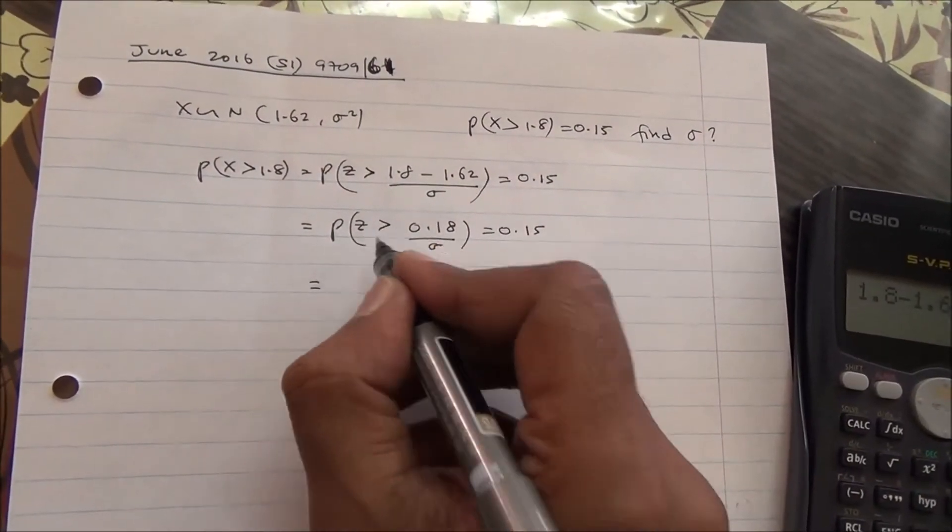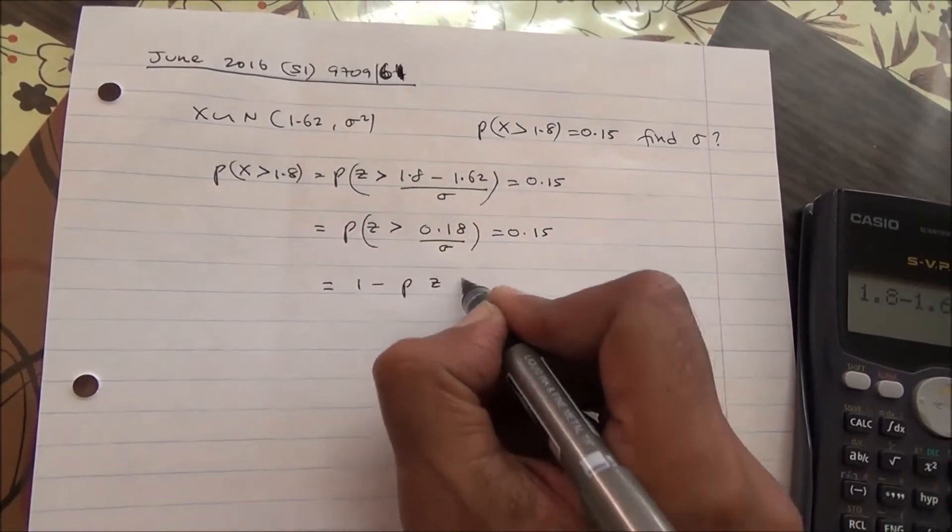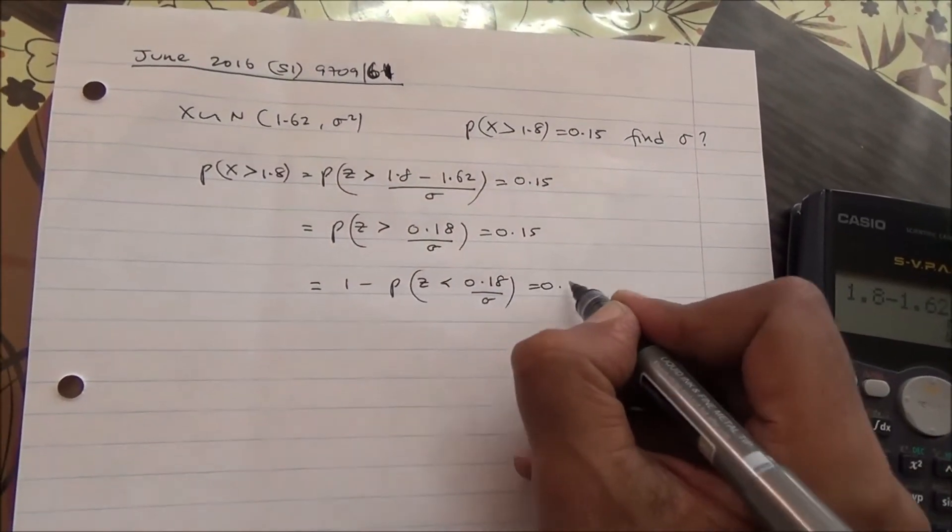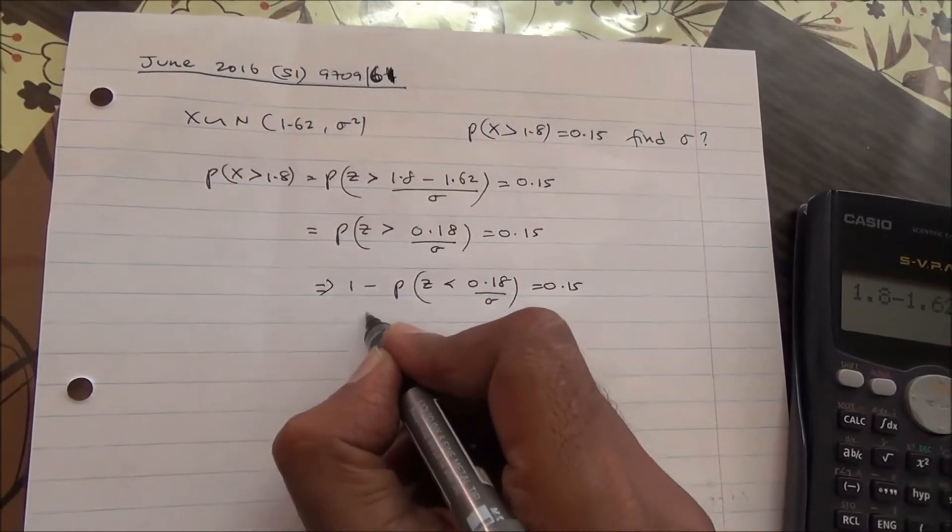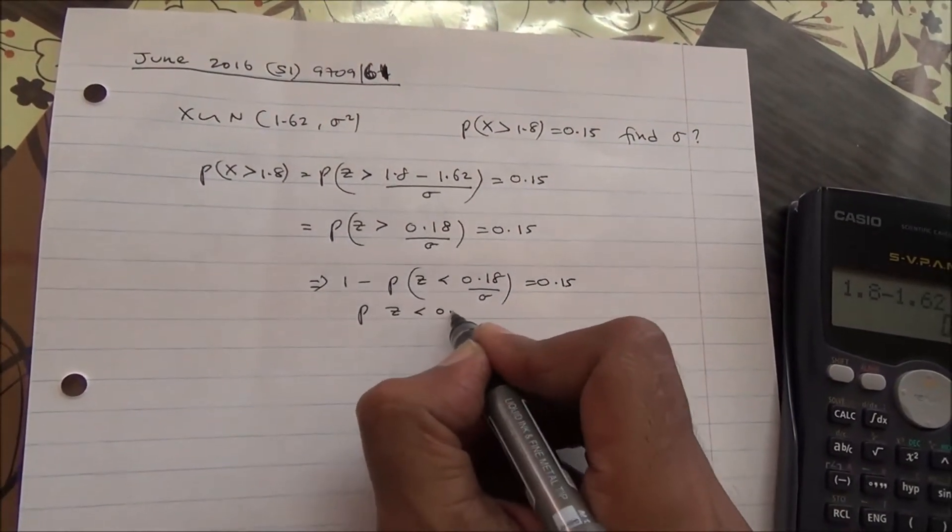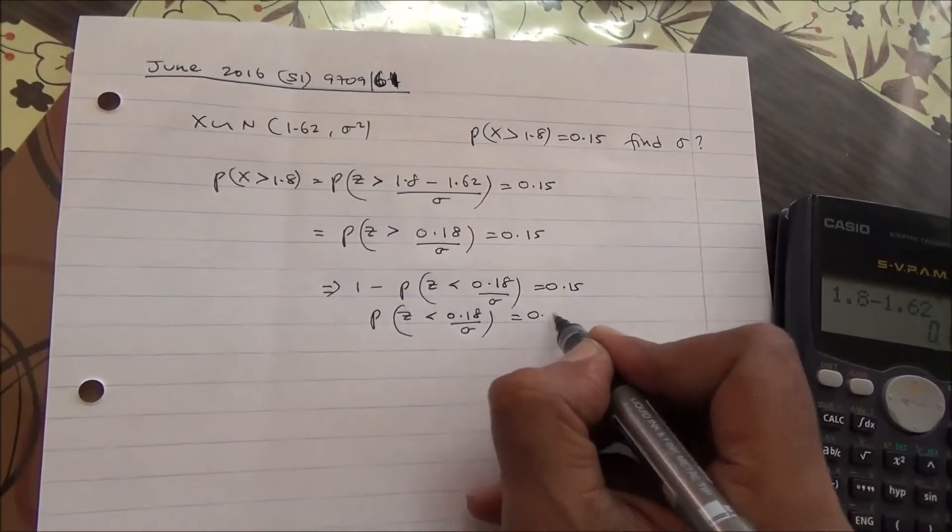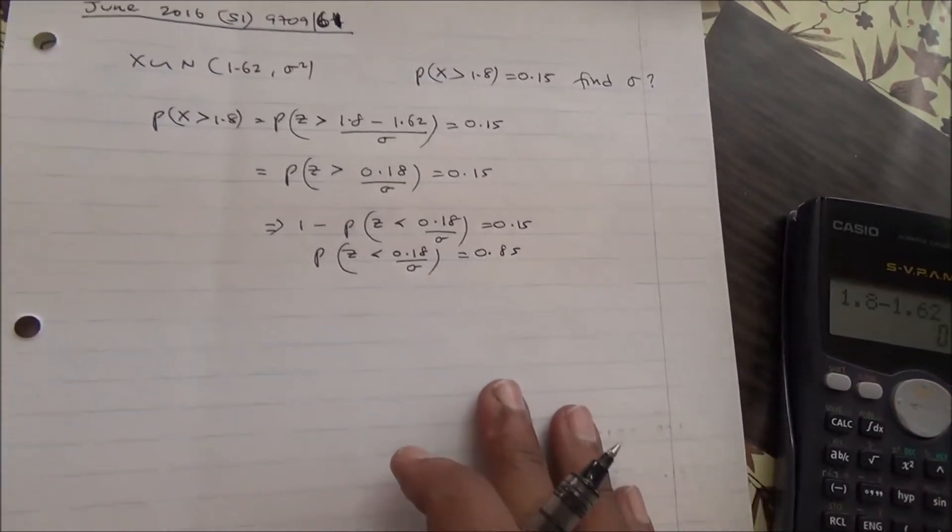Basically, this is positive, so 1 minus the probability of Z being less than 0.18 over sigma, and that's going to give you 0.15. So we're looking at probability of Z being less than 0.18 over sigma is equal to 0.85, because if we take 1 minus 0.15 is 0.85.